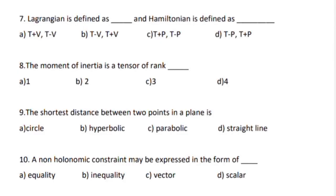Next one, Lagrangian is defined as dash and Hamiltonian is defined as dash. Right answer, Lagrangian is T minus V and Hamiltonian is T plus V.